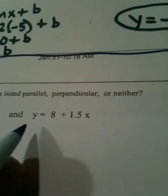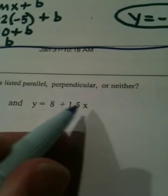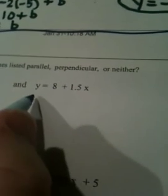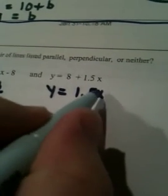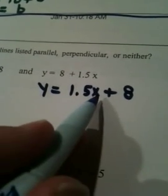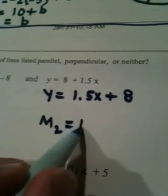When I look over here at this line, the number in front of the x is 1.5, and this is in slope intercept form, y equals mx plus b. If it helps you to put this in the right order, this is really 1.5x plus 8. 1.5 is the slope. It's in front of the x. So, m sub 2 is 1.5.